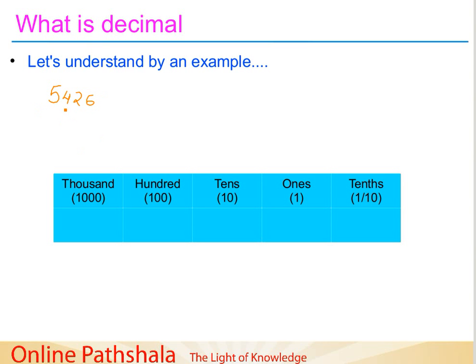Here there is a number — 5,426. So if I put this number into the place value table, this will be 5,000, 400, 26 — so 2 and 6 in the 1's place. So in this number, or in any such number, if you notice: